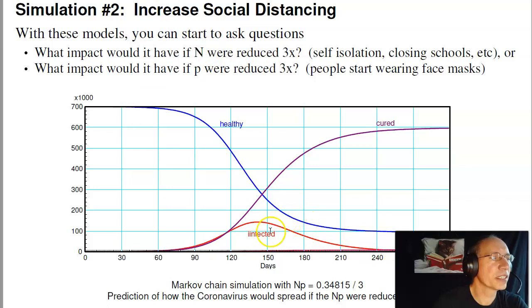The number of infected people goes from 420,000 down to about 130,000. A huge drop, which is much less of a drain or strain on the hospitals.